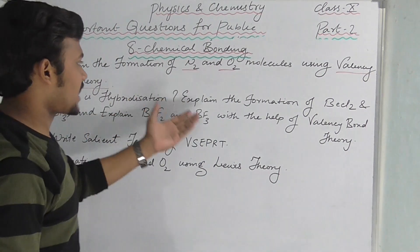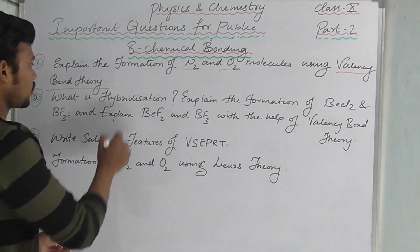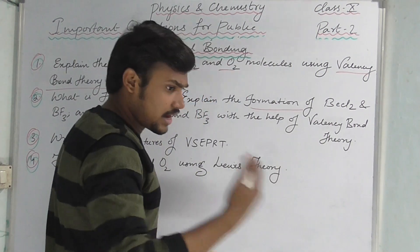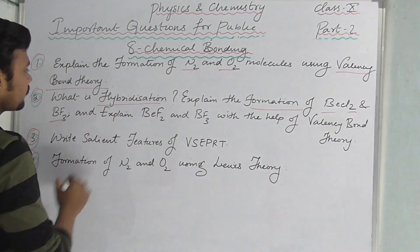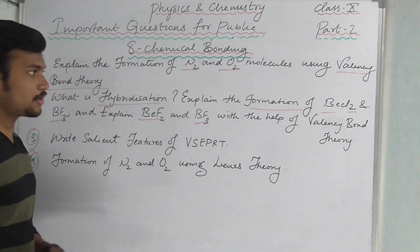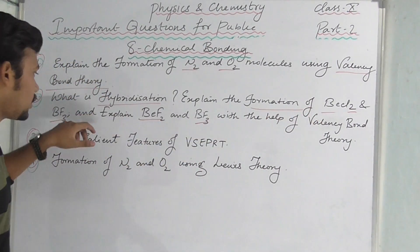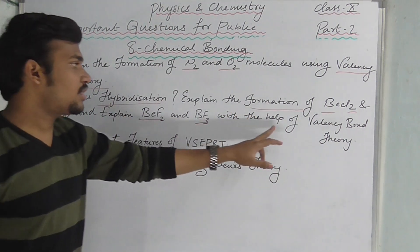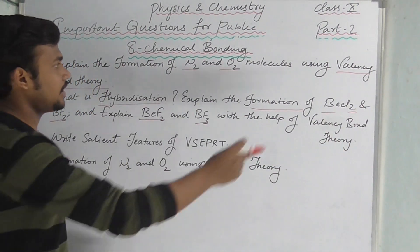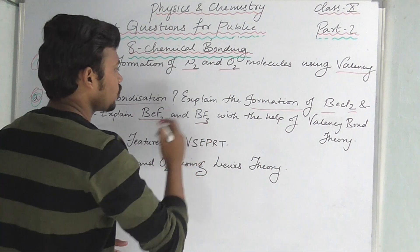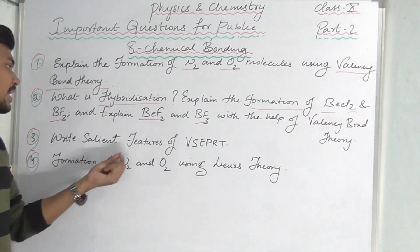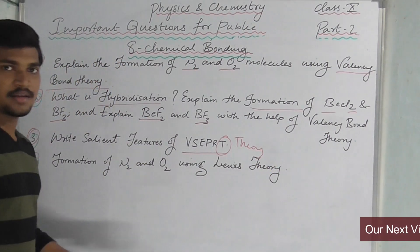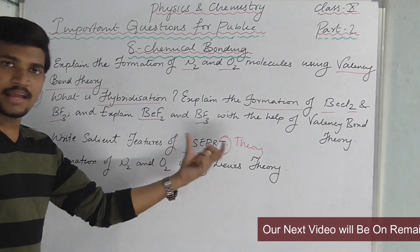What is hybridization? Explain the formation of BCl2 and BF3. You have to write the definition first, and then write the formation of BCl2 and BF3. You have to show BF3 as well. Next: write the salient features of VSEPR theory.